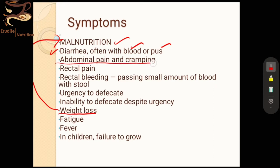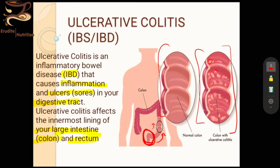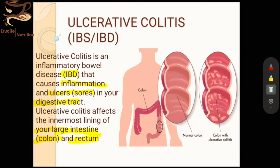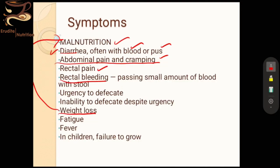Next is continuous abdominal pain and cramping — the patient will keep feeling cramps throughout the day and may have to go to the bathroom multiple times a day due to diarrhea and abdominal pain. Pain can also be directly felt in the rectal region. Rectal bleeding — some amount of blood is passed along with stools because these ulcers in an aggravated form can cause active bleeding.